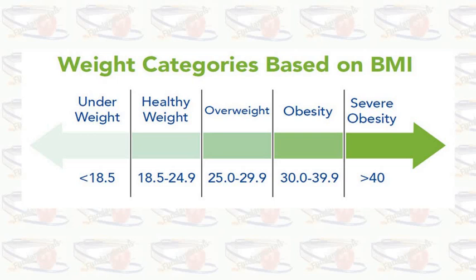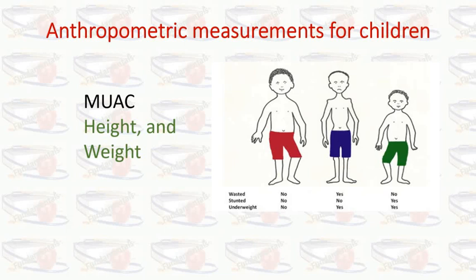These are further categorized: 25 to 29.9 is overweight, 30 to 39.9 indicates obesity, and more than 40 BMI indicates severe obesity. This is the most common anthropometric method used for adults.